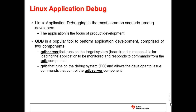Linux application debug is the most common scenario of the two types of Linux debug environments mentioned. It is the debug environment needed for Linux application developers. The GNU debugger, or GDB, is a common tool used for Linux application debugging. It is comprised of two components: GDB server, a monitor that runs on the target system, and GDB, the host-side debugger that interfaces to the GDB server running on the target. These two components work together to provide an environment to debug the Linux application running on the target.